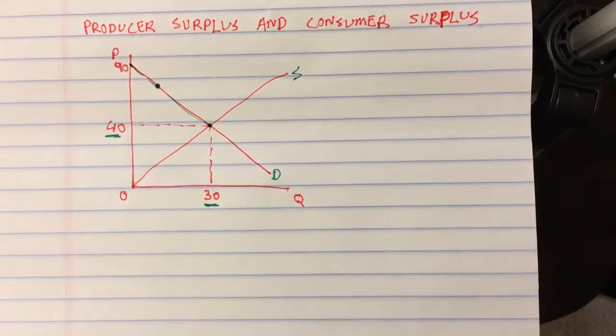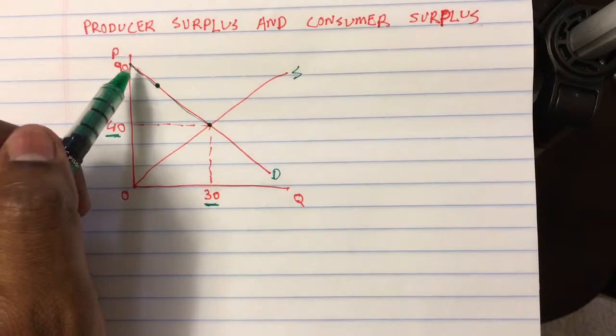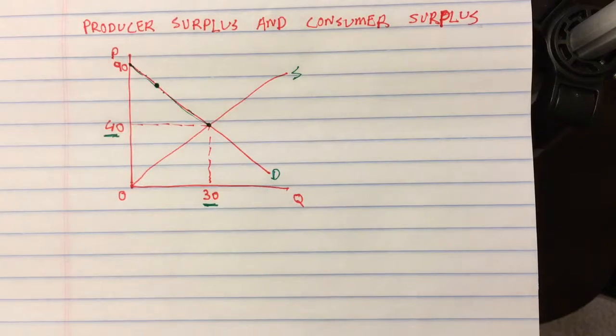One point here in the demand curve is basically one individual consumer. Now each point here represents a different consumer and there could be hundreds or thousands or even millions of consumers in the market.